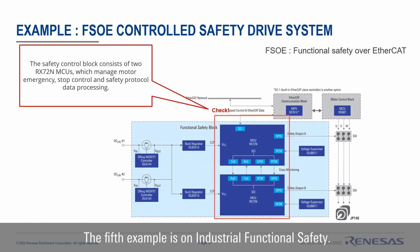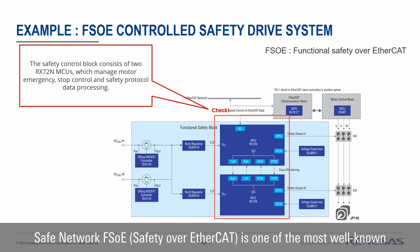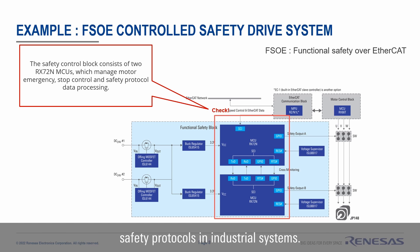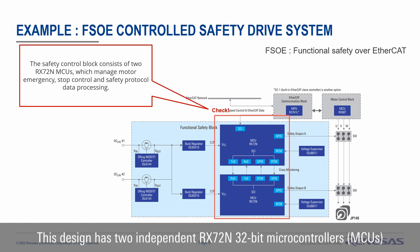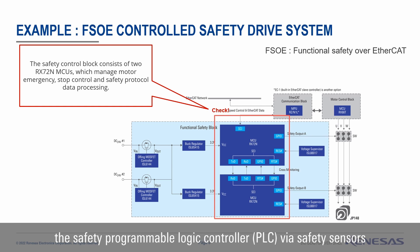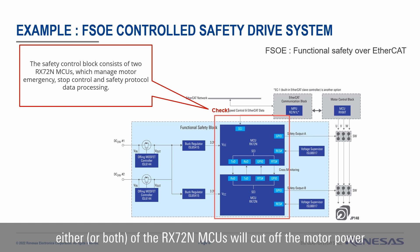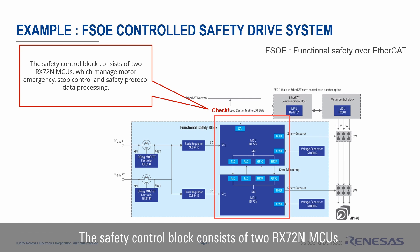The next example is for industrial functional safety. The system features secure industrial network control and secure motor drive. Safe network FSOE is one of the most well-known safety protocols for industrial systems. This design has two independent RX72M 32-bit microcontrollers that maintain control and safety cut-off power to the motor in the event of a system failure. Safety data such as emergency stop comes from the Safety Programmable Logic Controller via safety sensors or EtherCAT communication blocks. This safety data is checked separately by both RX72M 32-bit MCUs, and if either indicates an emergency, either or both will cut off the motor power to prevent a dangerous situation.